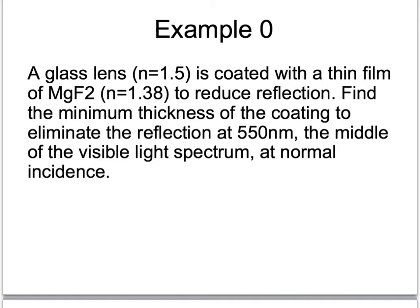A glass lens of n equals 1.5 is coated with a thin film of magnesium fluoride, MgF2, which has n equals 1.38, to reduce reflection. So this is like what they put on people's glasses to kind of reduce glare. Find the minimum thickness of the coating to eliminate the reflection at 550 nanometers, which would actually be green. The middle of the visible light spectrum at normal incidence.